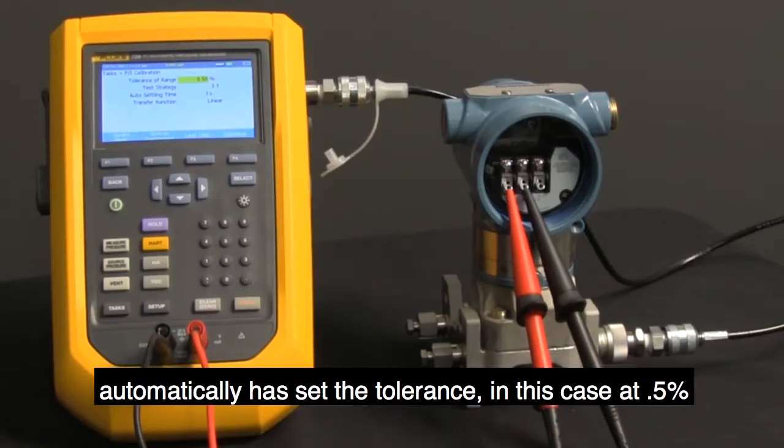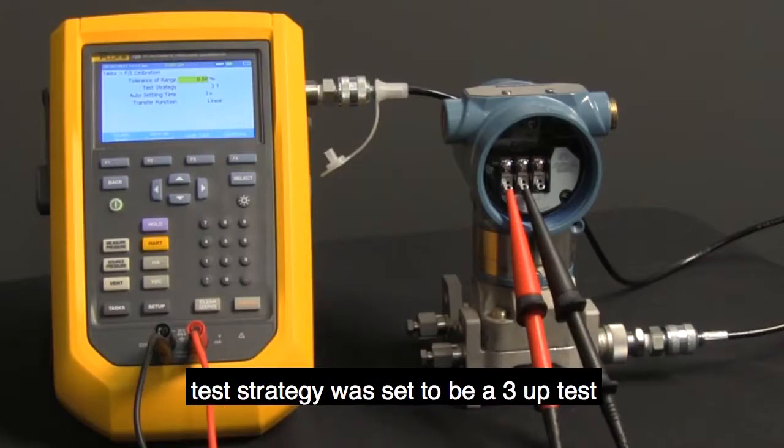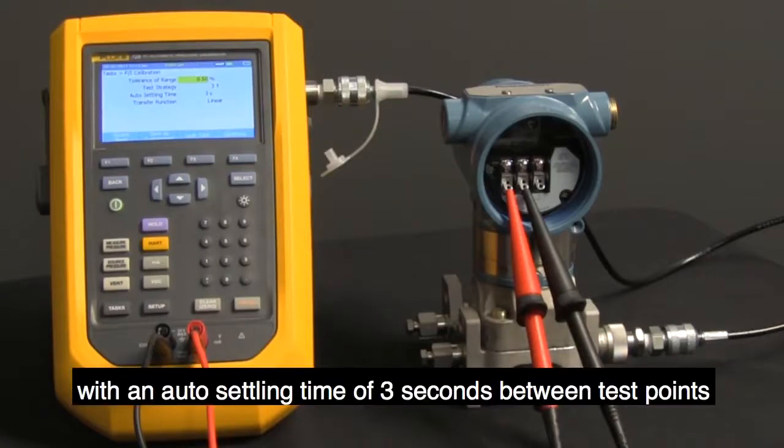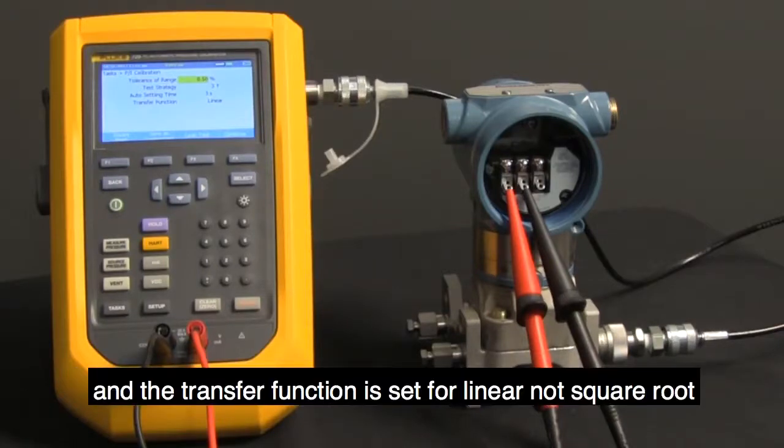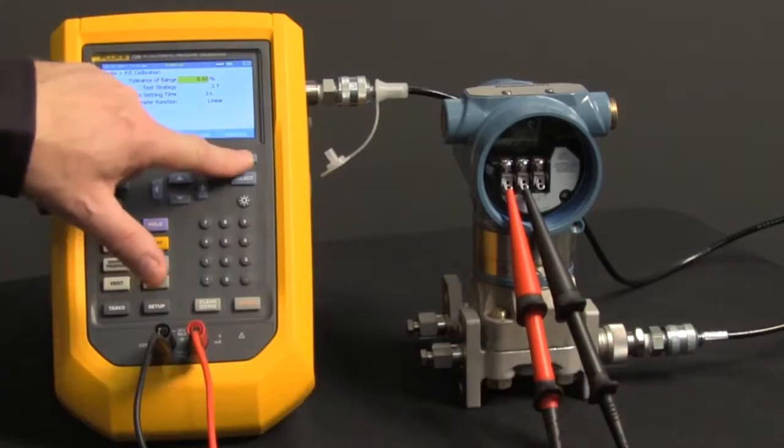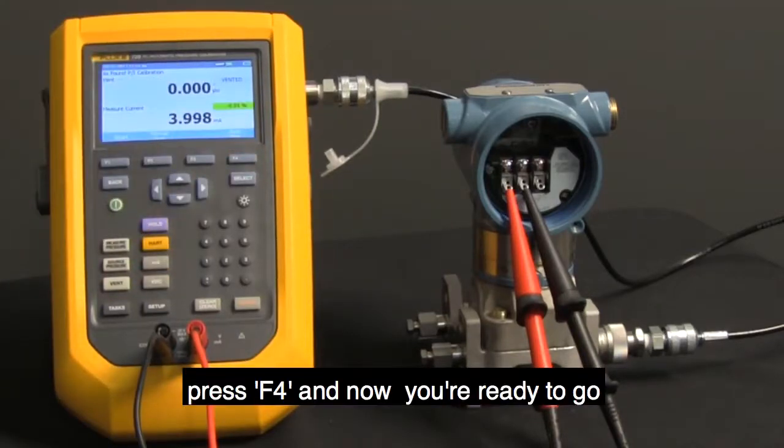Automatically has set the tolerance in this case at 0.5%. Test strategy was set to be a three up test with an auto settling time of three seconds between test points. And the transfer function is set for linear, not square root. Press F4 and now you're ready to go.